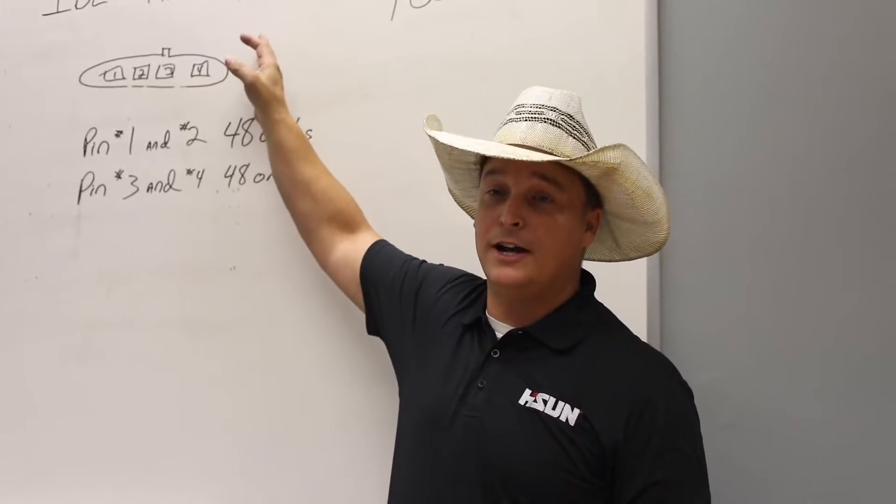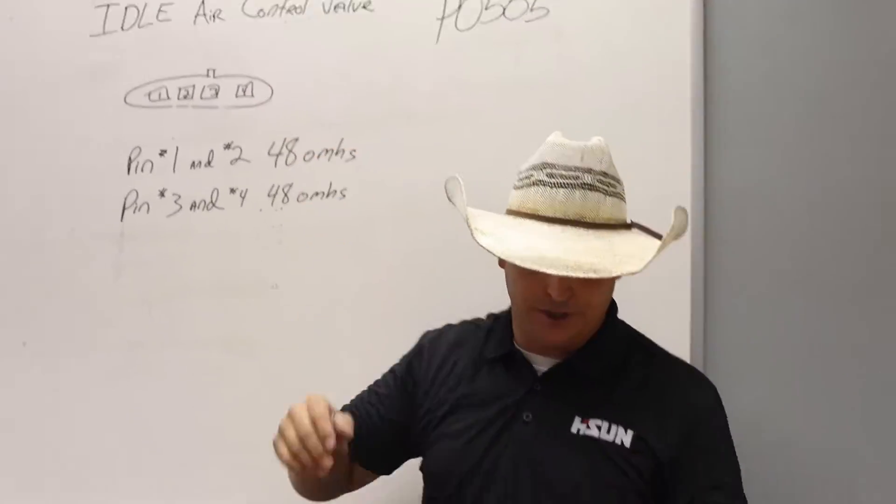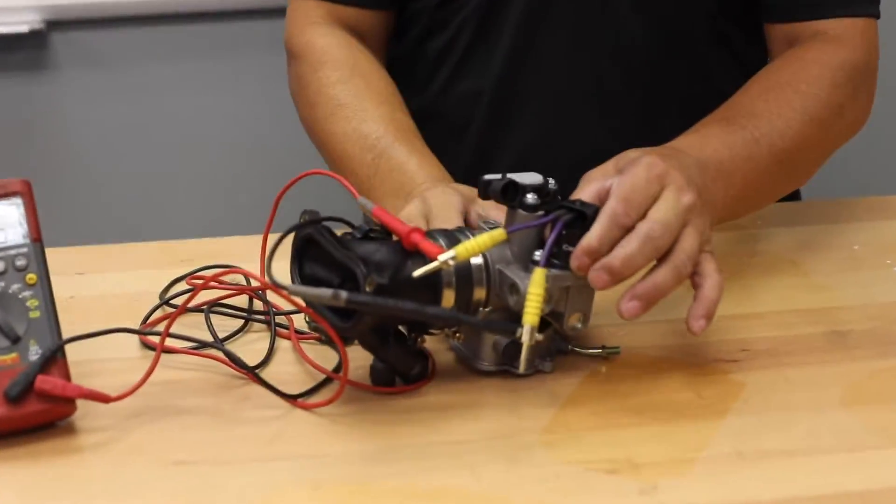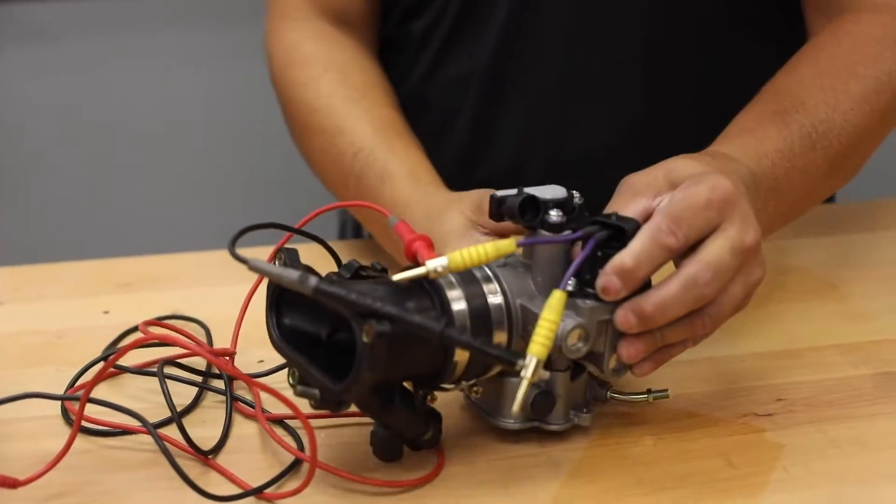Today we're going to be testing the idle air control valve, which is this sensor right here. It's going to be on the bottom of your throttle body.